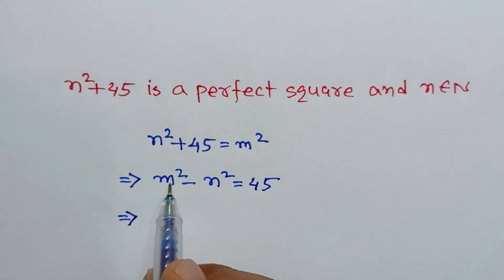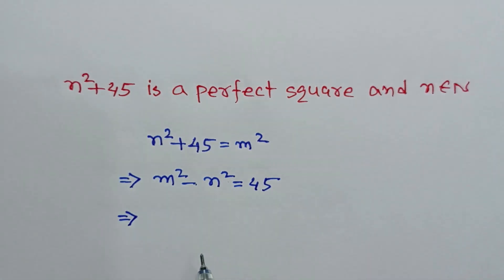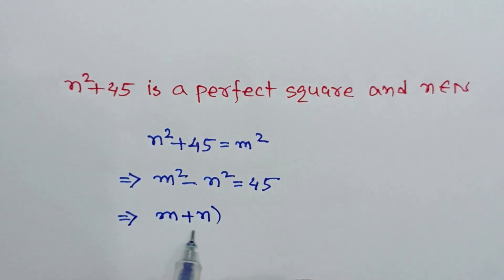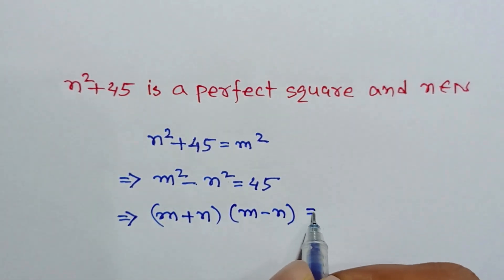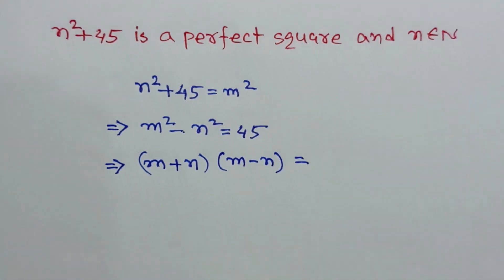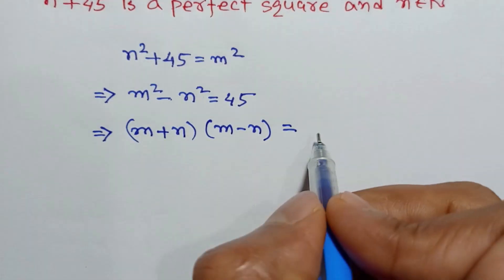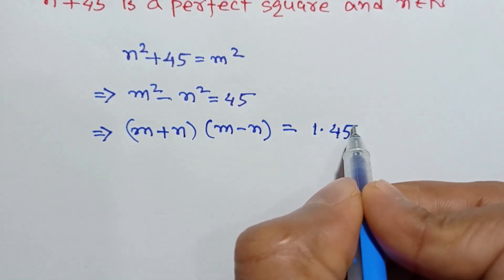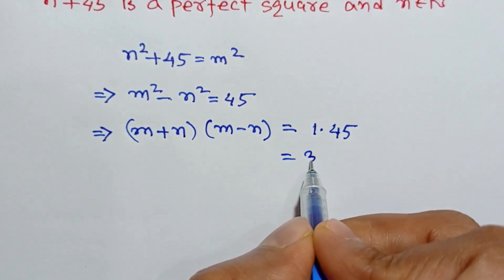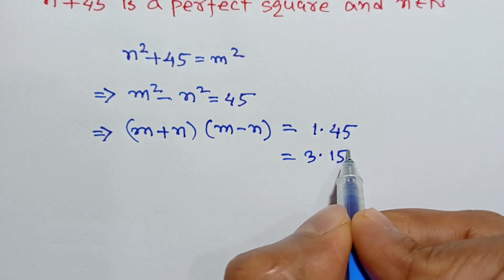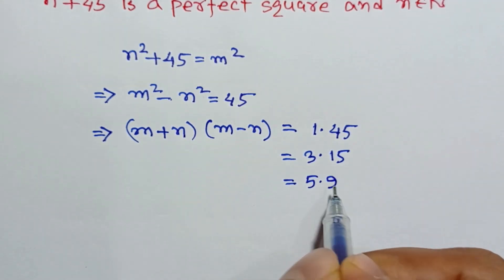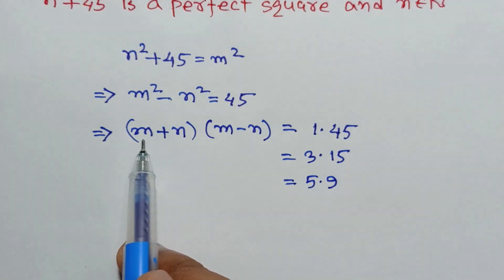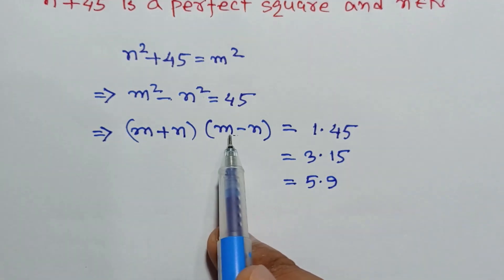Applying the formula a squared minus b squared is equal to (a plus b) times (a minus b), we can write (m plus n) times (m minus n) is equal to 45. This can be written as 1 times 45, or 3 times 15, or 5 times 9. Since m plus n is greater than m minus n...